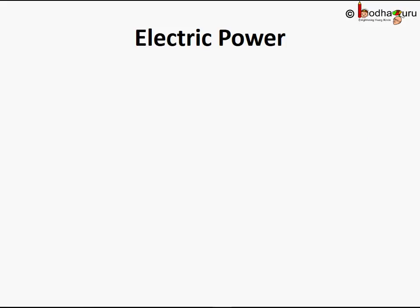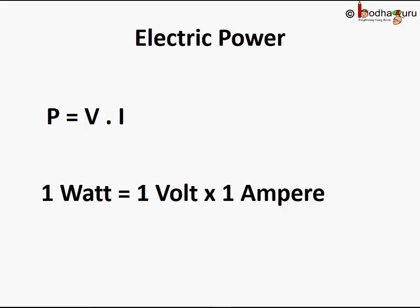Hello friends. We saw in the last lesson that power P consumed by an electrical circuit is equal to the product of potential difference V and the current I flowing through it — P equals V into I. The SI unit of power is watt, represented by W. That is the power consumed by an electrical circuit that carries one ampere of current when operated at a potential difference of one volt. We typically use kilowatt for practical purposes — one kilowatt equals one thousand watts.